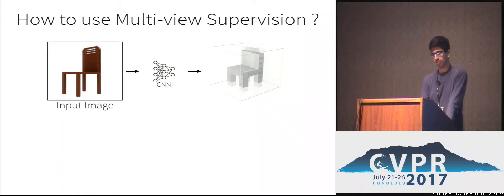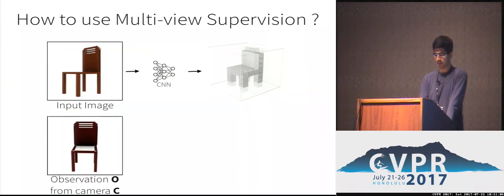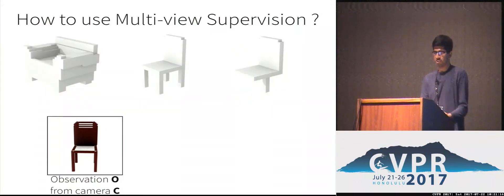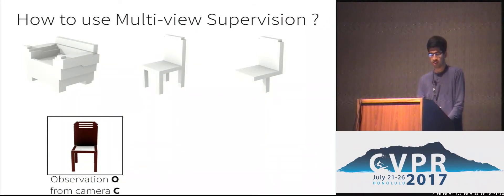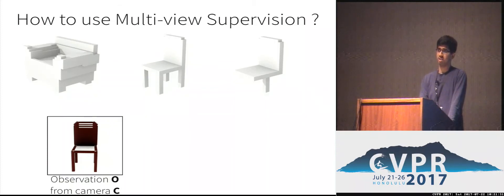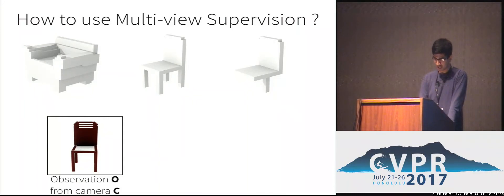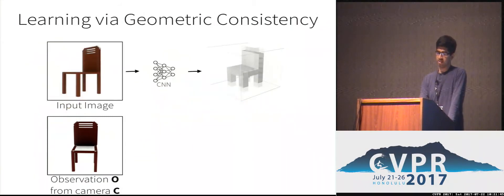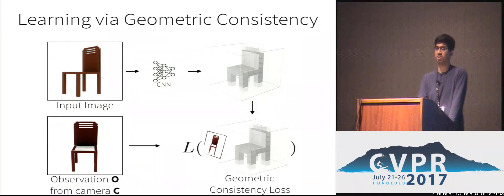We want to learn a prediction network that predicts 3D from an RGB input. But the form of supervision available is multi-view — for example, we may have another observation of a chair from the front. How can we use this form of supervision to learn this prediction network? The role of supervision is to tell us good predictions from bad, and multi-view supervision can allow us to do that. Consider these 3 shapes: given a front-facing image of the chair, the middle one is reasonable but the other two are not, because only the middle one will match the observation when viewed from the front. The middle shape is geometrically consistent with this image, whereas the other two are not. We build on this insight and say that our predictions should be geometrically consistent with the available observations.